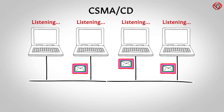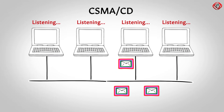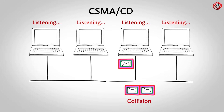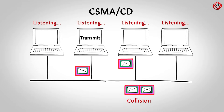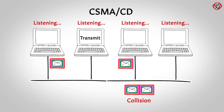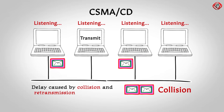Sometimes two computers attempt to transmit at the same instant. When this happens, a collision occurs. Each computer then stops transmission and waits a random amount of time before attempting to retransmit. Please note that with this access method, it is normal to have collisions. However, the delay caused by collisions and retransmitting is very small and does not normally affect the speed of the transmission on the network.